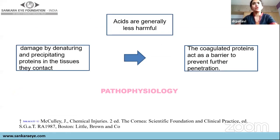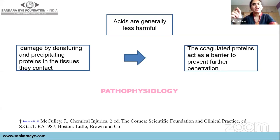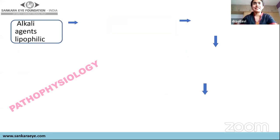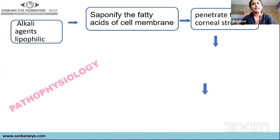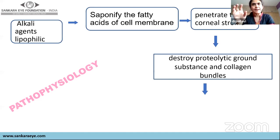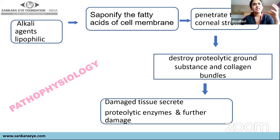What does acid or alkali do to the eye? Acids are less harmful — when they contact the cornea, they denature and precipitate the proteins of the tissue. This formed coagulum acts as a physical barrier to prevent further penetration, so the degree of injury is comparatively less. The exception is hydrofluoric acid, which is very severe and rapidly penetrates despite being an acid. The pathophysiology of alkali is different — it is a lipophilic substance that separates the fatty acids of the cell membrane, gets entry into the corneal stroma, and destroys the proteoglycans and collagen bundles, creating necrotic material and perpetuating chronic inflammation. That's why alkali injuries are more dangerous.